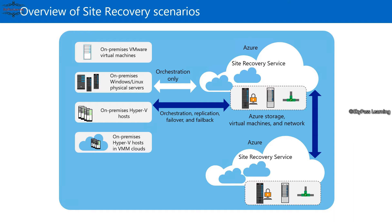ASR is based on three main scenarios. The first is failover and failback between two on-premises sites — primary and secondary. The second is failover and failback between an on-premises site and an Azure region, where you fail your virtual machines over to Azure. The third scenario is failover and failback between two Azure regions, which is rarely required since Microsoft already provides high availability, but it's available if you have critical applications.